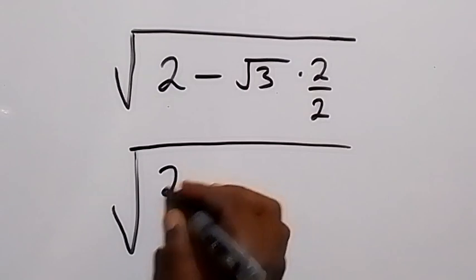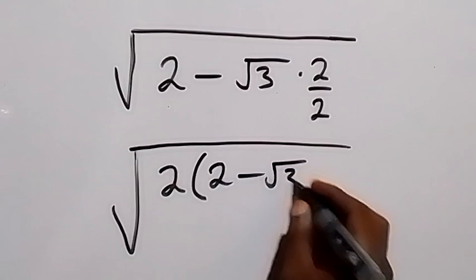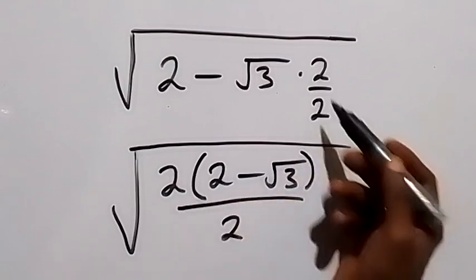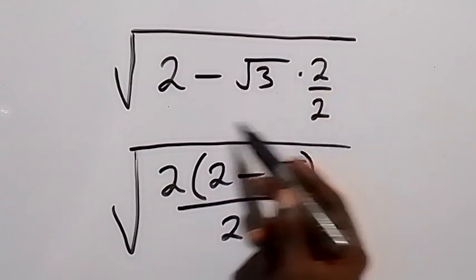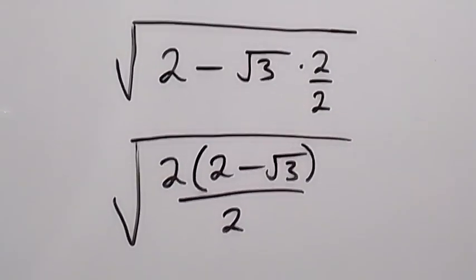2 into bracket, 2 minus root 3, then divided by 2. So these 2 we put in bracket and we divide it by 2, so 2 divided by 2, we still have the same thing.